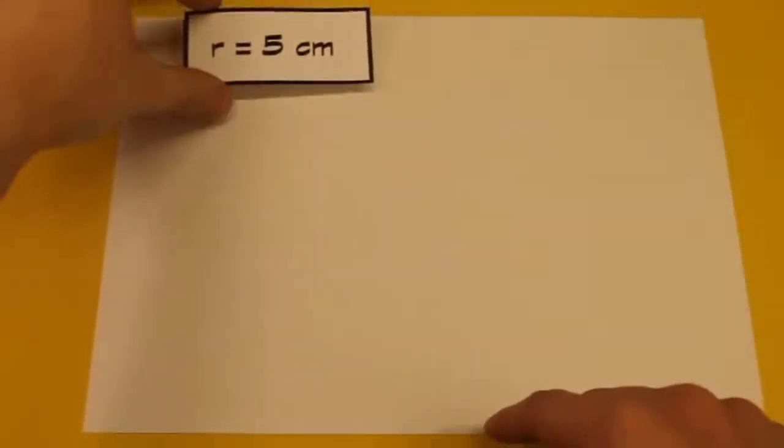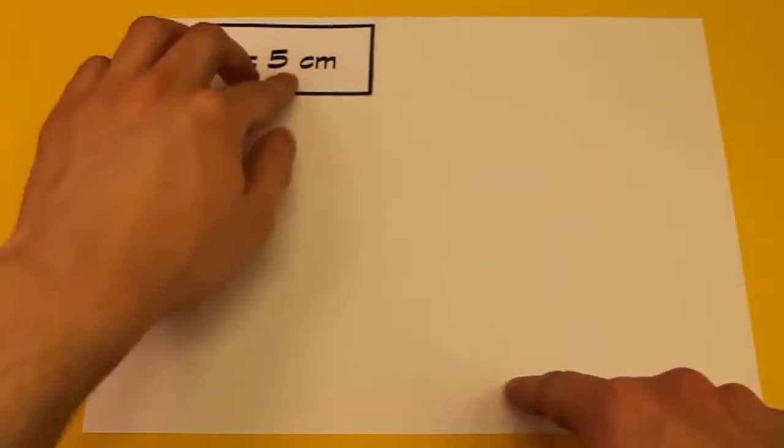In diesem Lernvideo wird es jetzt ernst, denn wir werden unseren ersten richtigen Kreis konstruieren. Um einen Kreis konstruieren zu können, müssen wir immer wissen, welchen Radius er hat. Für dieses Beispiel verwenden wir einen Radius von 5 cm.